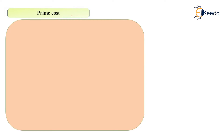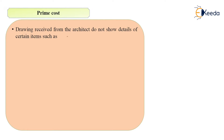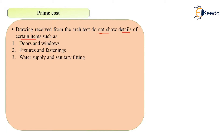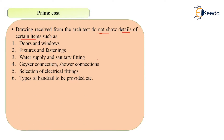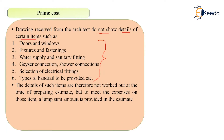The next term is Prime Cost. Drawings received from the architect will not show details of certain items such as doors and windows, fixtures and fastenings, water supply and sanitary fittings, geyser connections, shower connections, and selection of electrical fittings. Since these details are not available, a lump sum amount is added into the estimate to meet these expenses, and that is your Prime Cost.